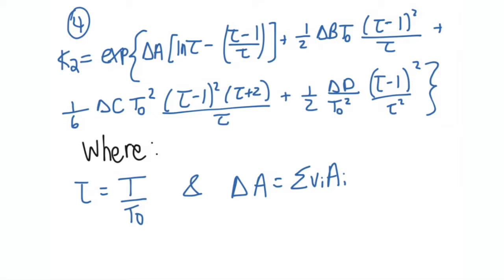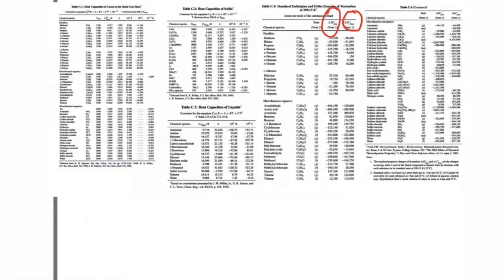And then for number four, it looks a bit complicated but really it's not too complicated. The only thing you have to note is that this τ here is your temperature over your T0, which I've written right here. And these are all Δa, Δb, Δc, Δd - these are your heat capacities from your table.